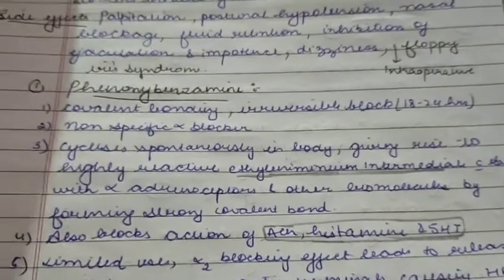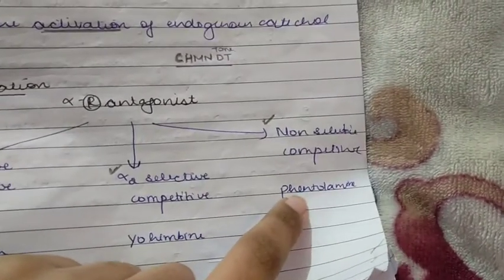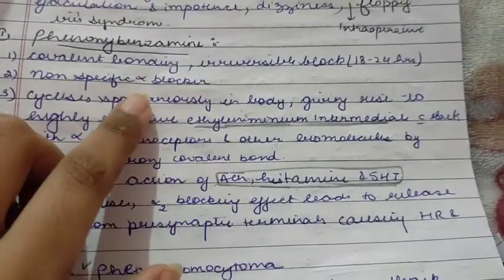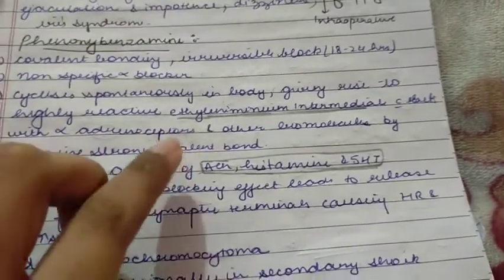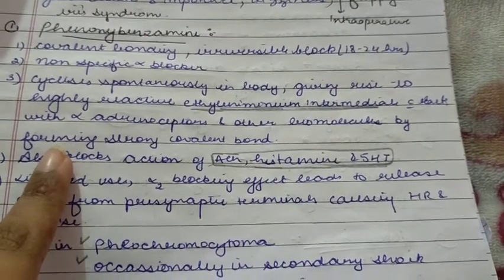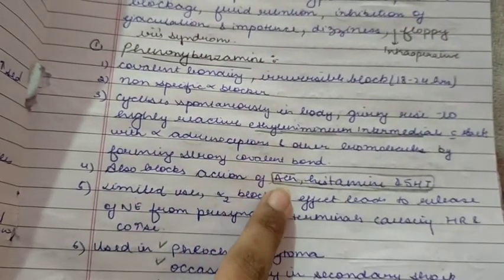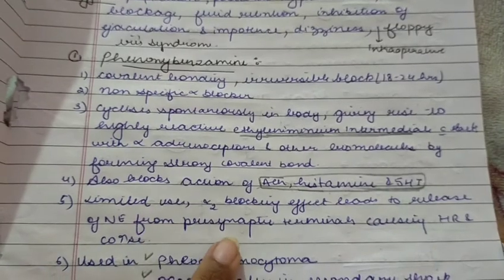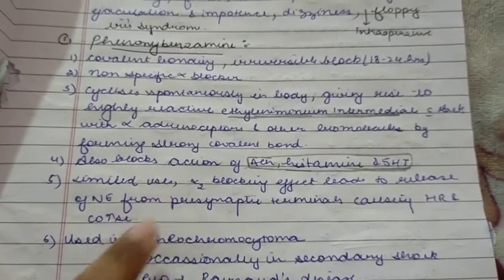Phenoxybenzamine is a non-selective, irreversible alpha-blocker acting on both alpha-1 and alpha-2 receptors via covalent bonding. It cyclizes spontaneously in the body to give a very reactive ethylenimine intermediate, which alkylates alpha-adrenoceptors and other biomolecules by forming strong covalent bonds. It also blocks the action of acetylcholine, histamine, and 5-hydroxytryptamine. Its use is limited because the alpha-2 blocking effect leads to release of norepinephrine from presynaptic terminals, causing heart rate and cardiac output to increase.